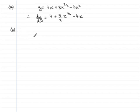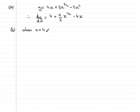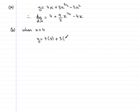So there we have part A. For part B we've got to show that the point (4, 8) lies on C. To do this we just need to substitute x equals 4 into the equation above. So when x equals 4, find out what y is — hopefully we can show it comes to 8. When x is 4, y equals 4 times 4, plus 3 times 4 to the power 3/2, minus 2 times 4 squared.